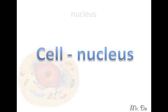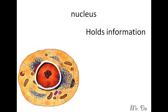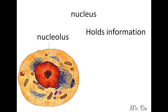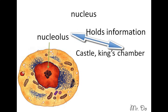The cell nucleus holds on to the information. It's the big red in the middle. The nucleolus is the thing in the middle inside of the nucleus — it's a big blob, a dark patch. If we were to build our city, and the nucleus was a castle, then the nucleolus would be like the king's chamber.